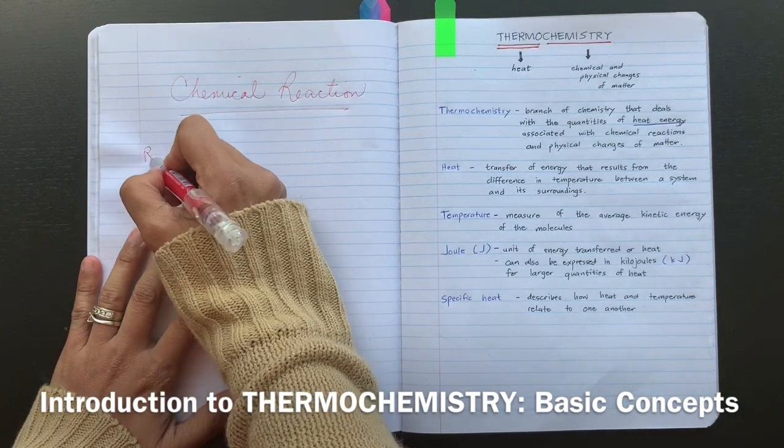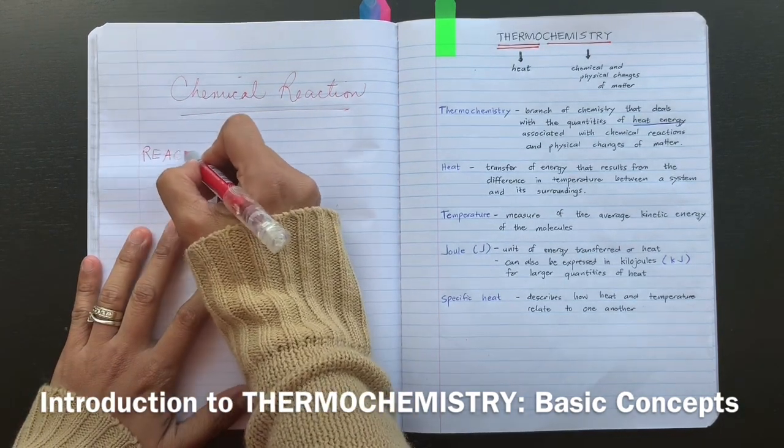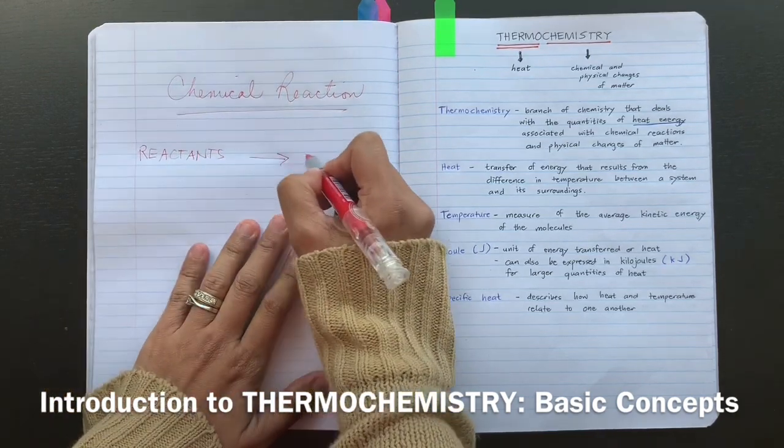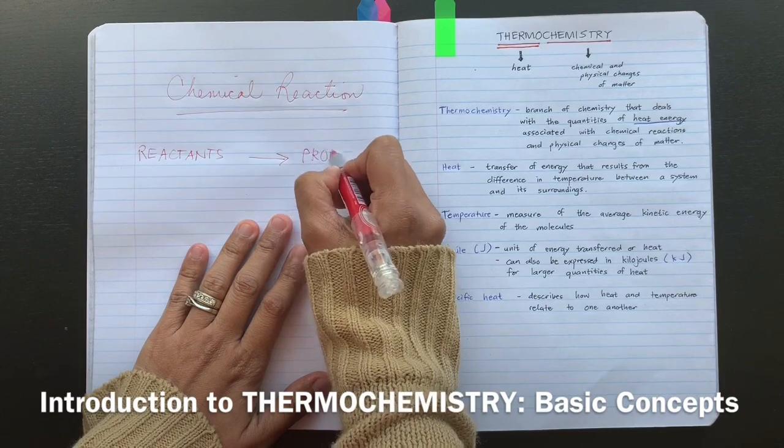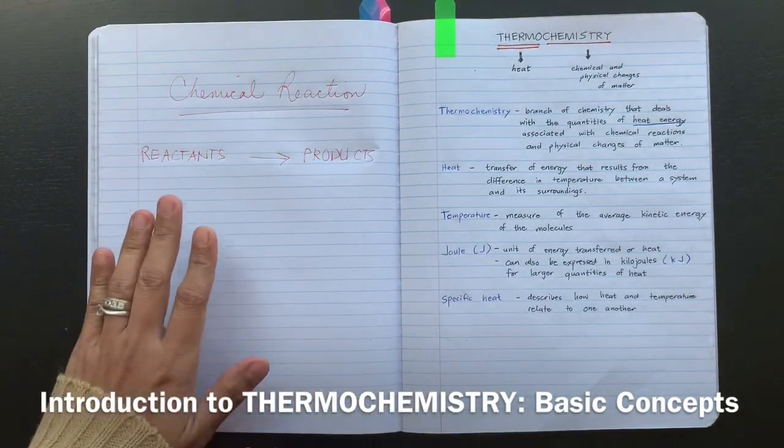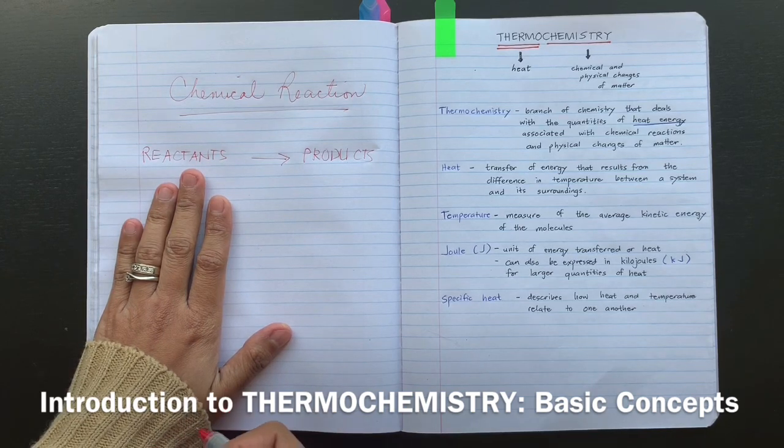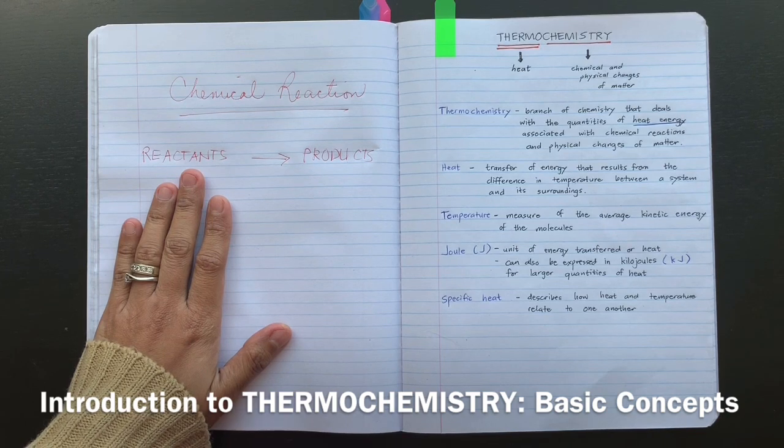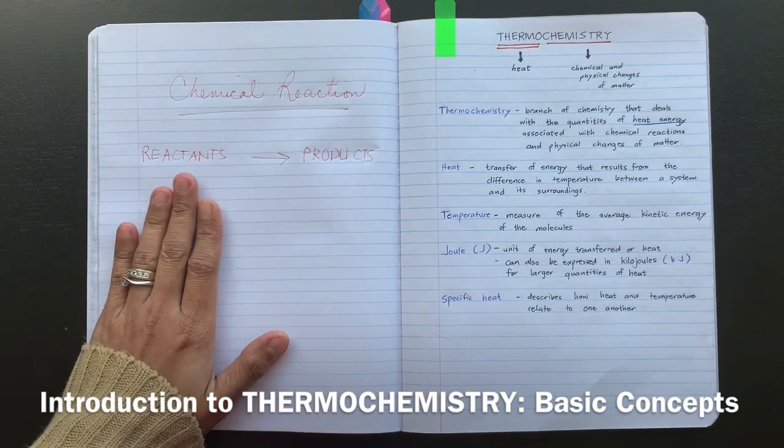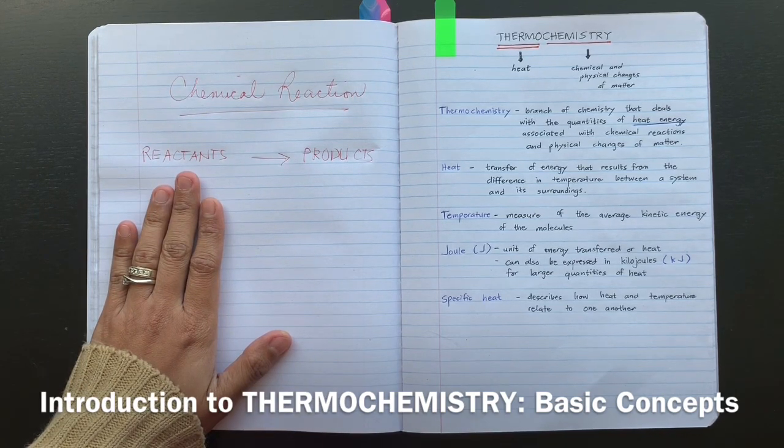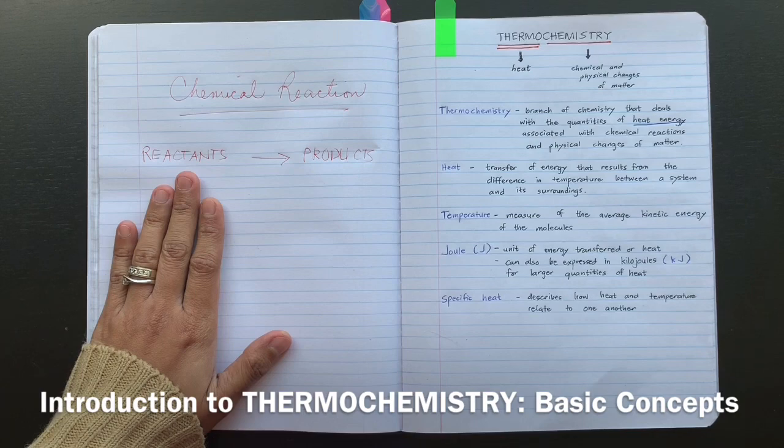We know that in a chemical reaction, we have our reactants that will react to form our products. And we know that the products themselves, they have what we call the stored energy, which we commonly term as chemical energy because this chemical energy serves as a potential energy of this reactants because they are able to do a little work or some work.